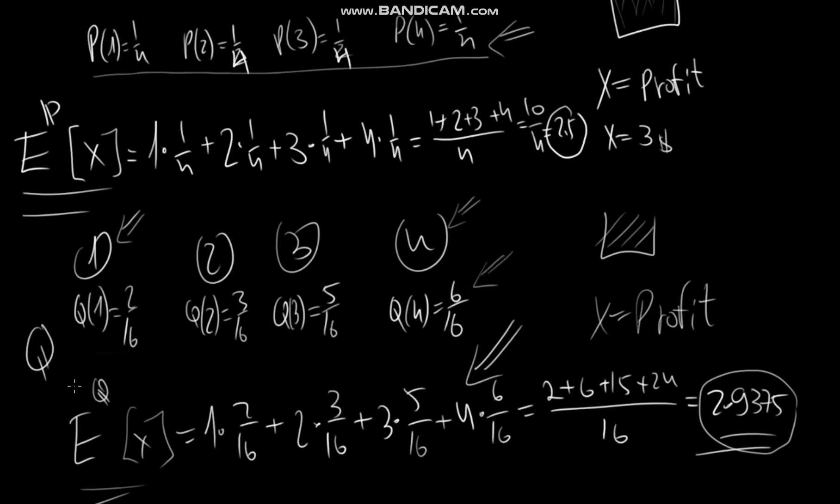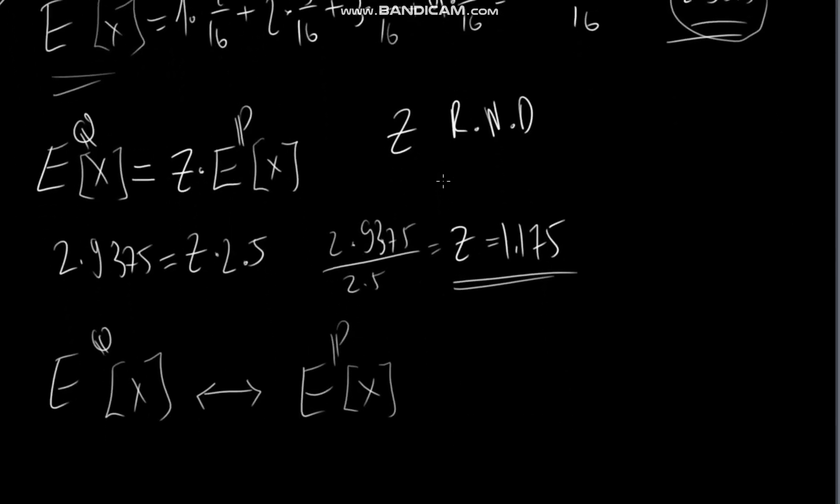So if I have this Q measure and I want to work with the P measure, all I have to do is take into consideration this Radon Nikodym derivative, which is telling me how to change from the expectation under the Q measure to the expectation under the P measure. And this of course is a simple case and we will see later on how we can relate it to continuous times and much harder problems.